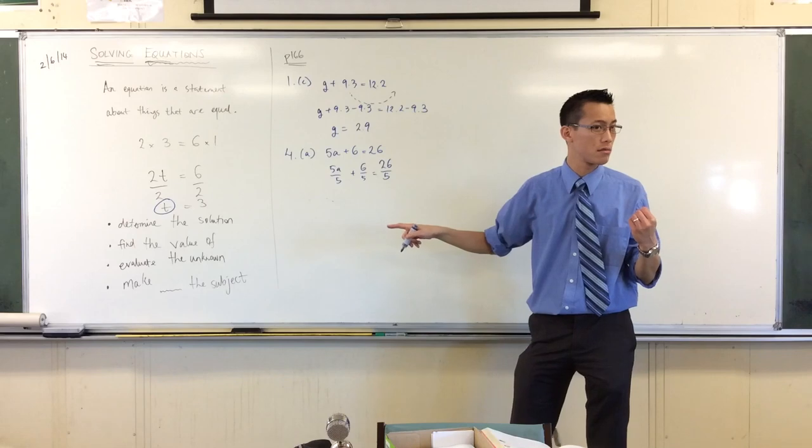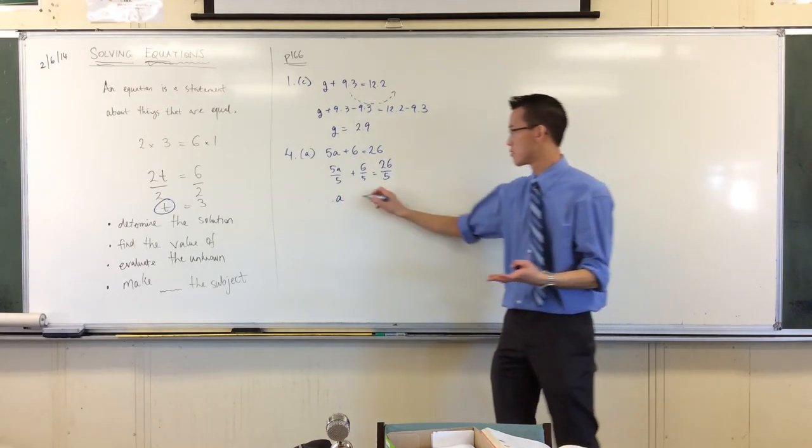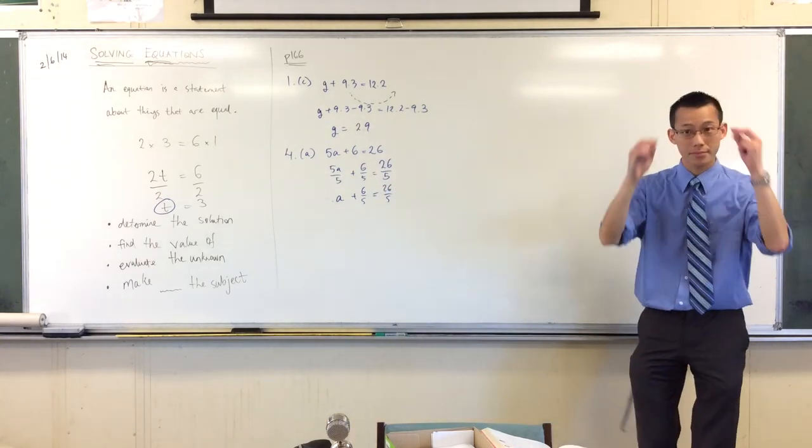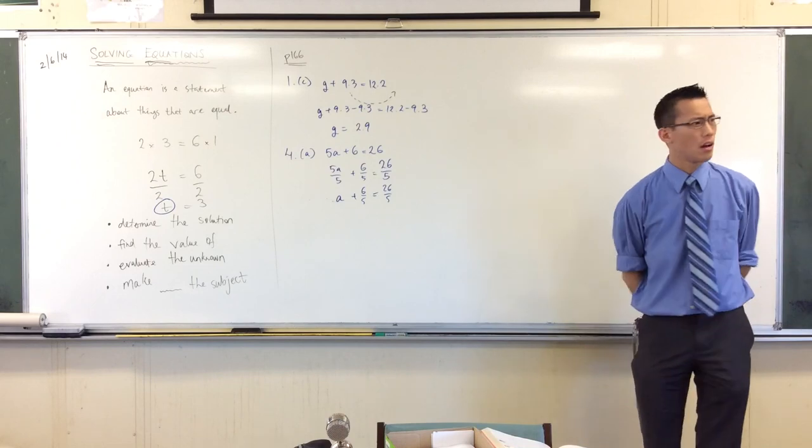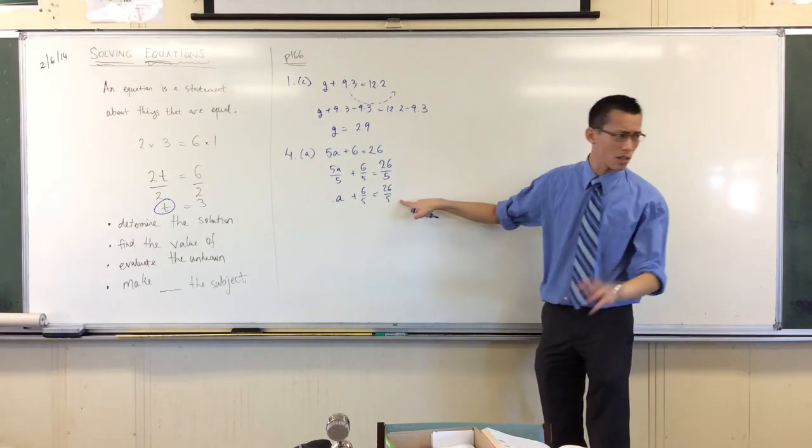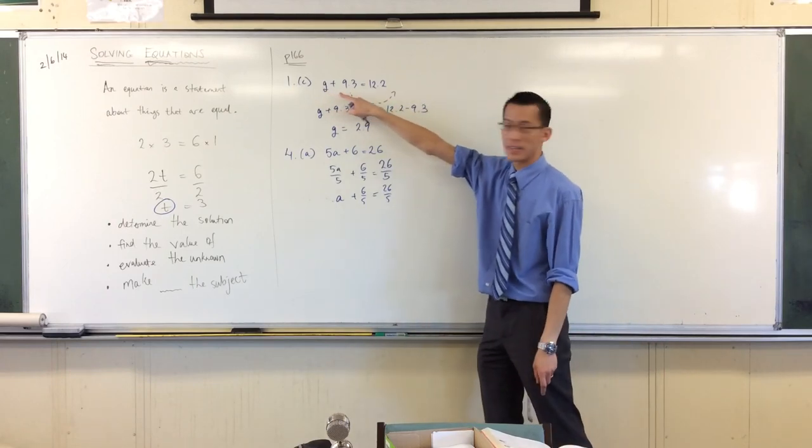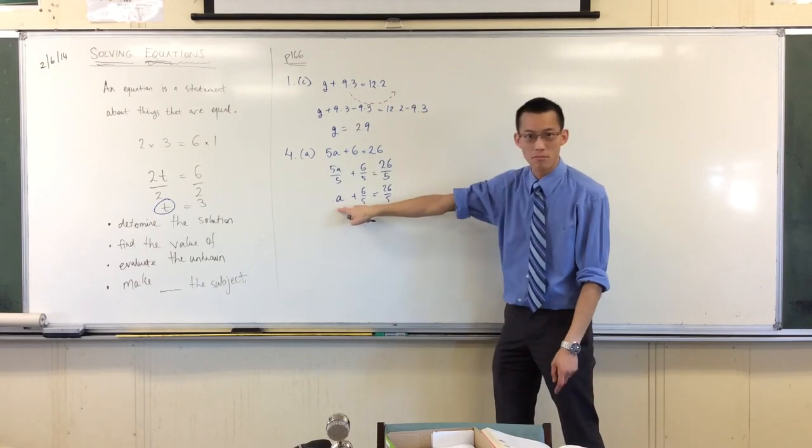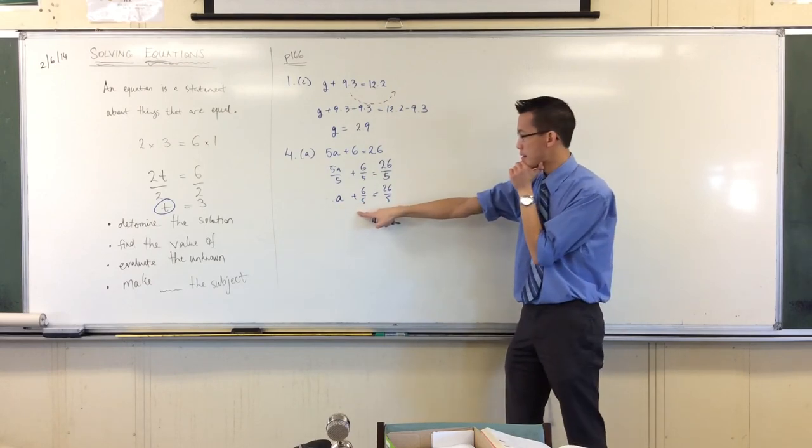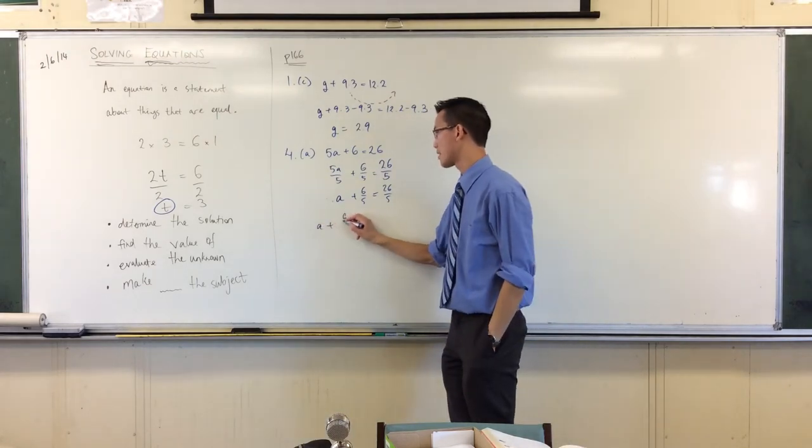If I do one thing one side, not the other, is this okay? Is this going to work? 5a over 5 is just a, right? Now what do I do? Plus 6 over 5, I want the a on its own, right? This line here, I know it's got weird fractions in it, but it looks very much like this line. You've got what you want plus something else, that's what we want plus something else. So what should I do to both sides? Yeah, I should subtract, right?